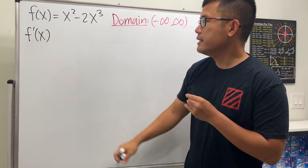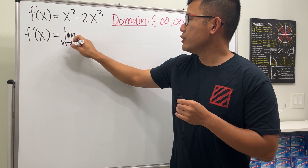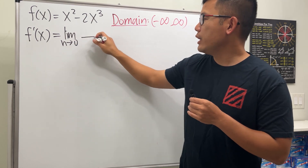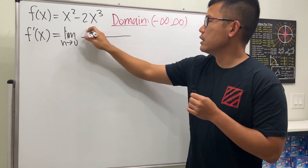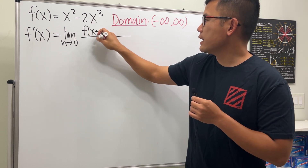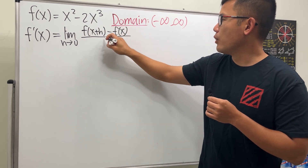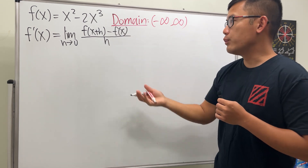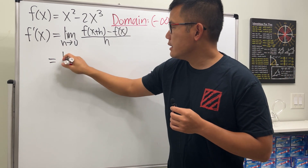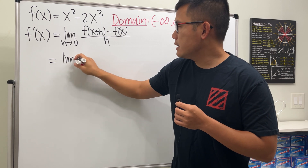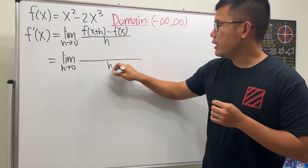Now here is the derivative, which we'll denote by f prime of x. This is given by the limit as h approaches zero. I'll write down the definition: f of x plus h minus f of x, all over h. Then we can just plug in and work it out. The bottom is just h.